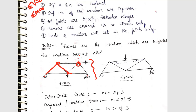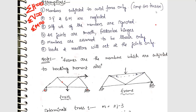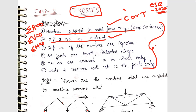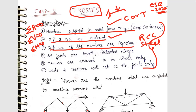All members in a truss are perfectly linear, and all loads should act only at the pin joints. The only forces induced in trusses are axial forces — there won't be any bending moment. Self-weight of members is ignored; this is common for all chapters of structural analysis. In RCC and steel structures we consider the weight of the structure, but in structural analysis we are analyzing how much load a structure can bear, so we ignore the self-weight of members in almost all chapters.